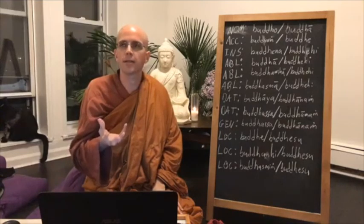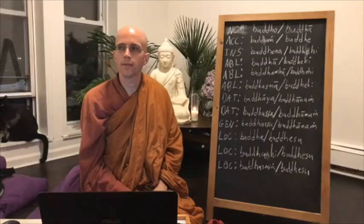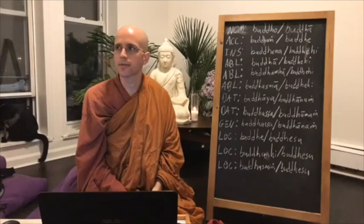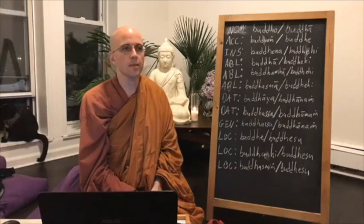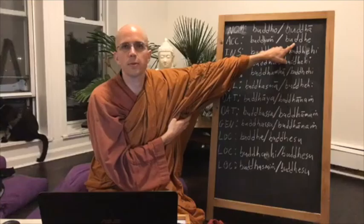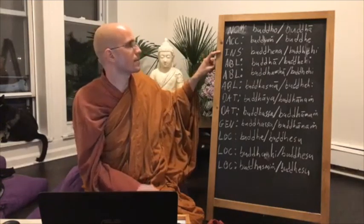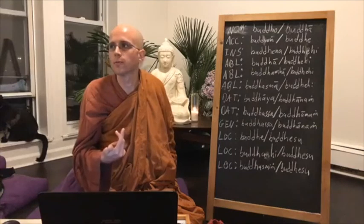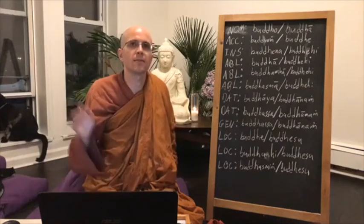Accusative is the direct object — it's what something is happening to, or in the direction of. So 'I give the book to the Buddha' or 'I'm going to the village' — the village would be accusative. It indicates motion toward something or something happening to it. Buddhang means to one Buddha, Buddhe means to multiple Buddhas.